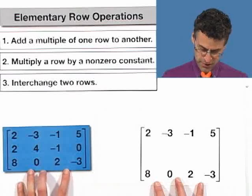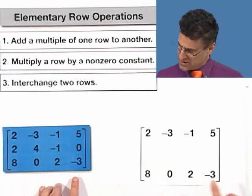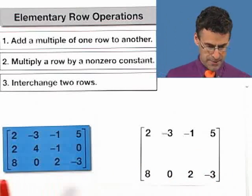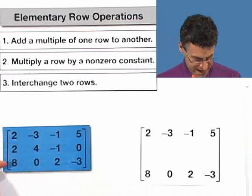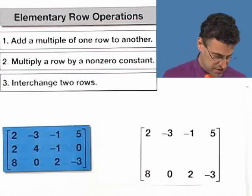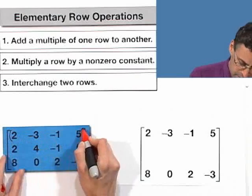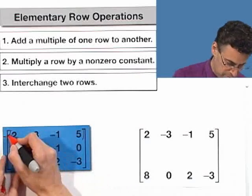So I'm going to do nothing to the first row, I'm going to do nothing to the third row, but I'm going to replace the second row by multiplying the first row by negative 1 and adding it to the second row. And I'll just denote that maybe by putting a little negative 1 here to remind me that's what I'm doing.